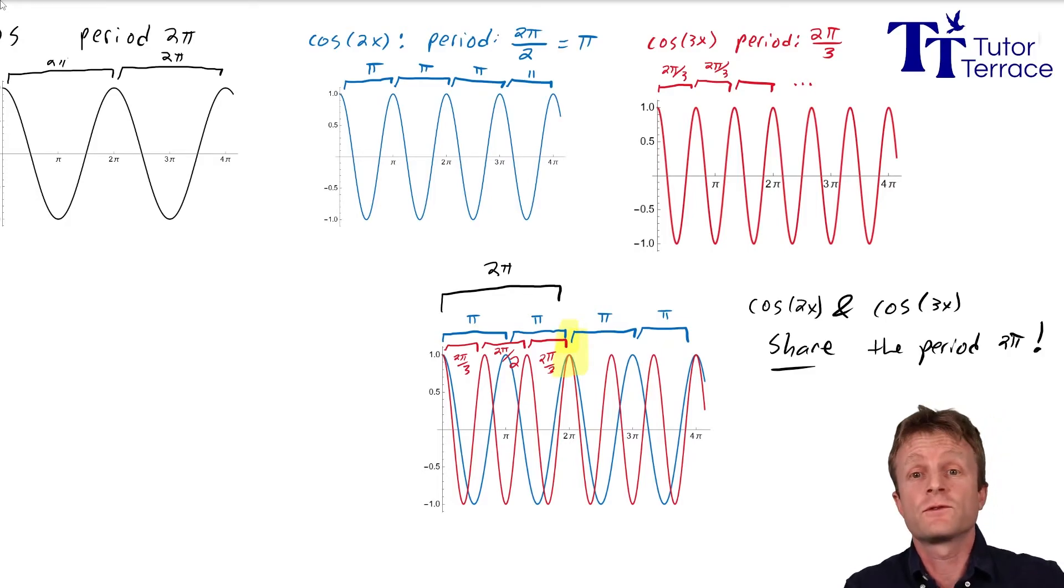This thing here, this region 2π, both functions come back to themselves. So cosine 2x and cosine 3x share the period 2π. If you're asked for the period of cosine 2x, you're supposed to say π, because that's the smallest period. But it also has a period 2π. It repeats every 2π. And so does cosine 3x.